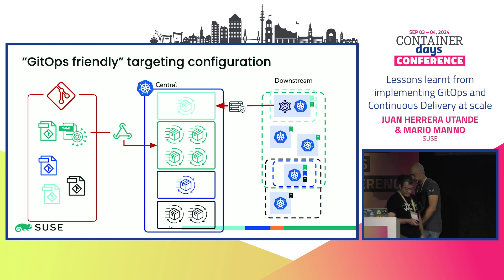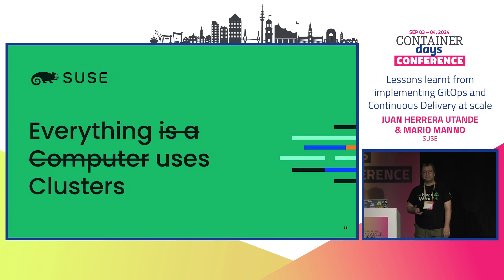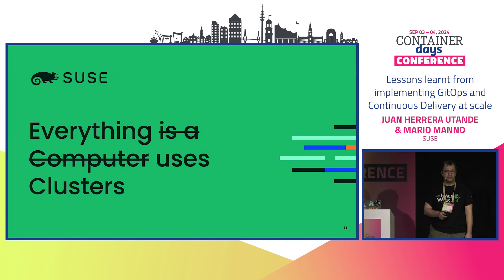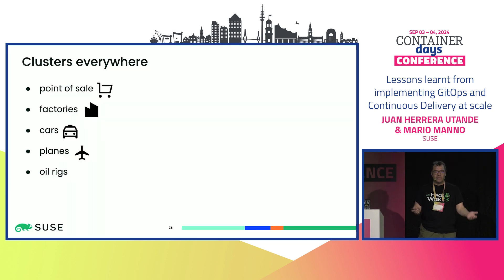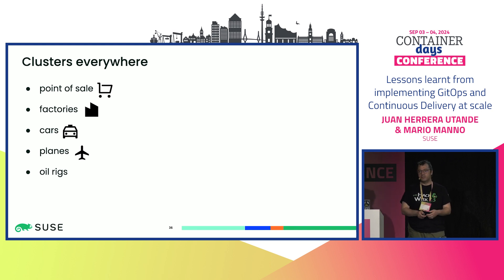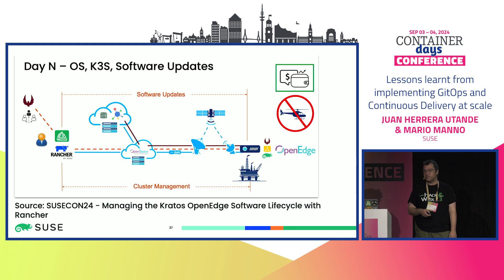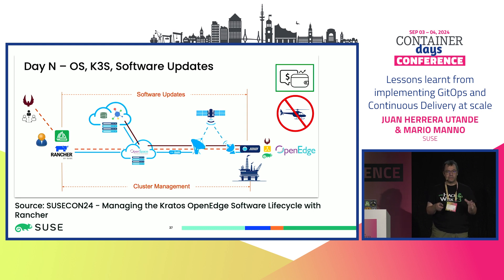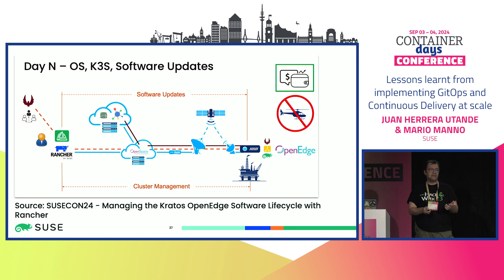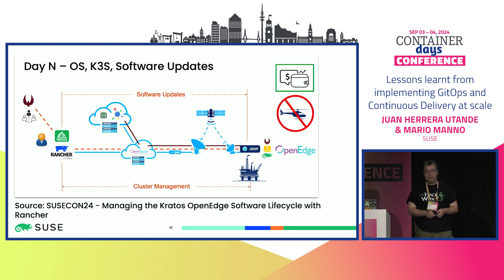Thanks. Fifteen years ago there was a meme that everything is now a computer — your mobile phone, your watch, even your banking card runs arbitrary applications. Nowadays, it seems like clusters are everywhere: in point-of-sale terminals, in factories with multiple clusters per site, in cars and planes. There was a presentation at SUSECon that really surprised me — they had a cluster on an oil rig. On day zero, they flew the machine out to the rig, and the next day they could update it over satellite links without paying for a helicopter. Really, clusters everywhere.